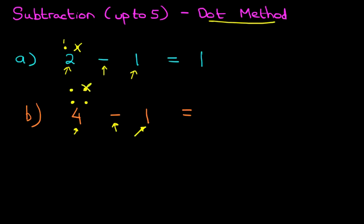Check the sign — it is minus, so we are going to take away, we are going to subtract. Now how much are we going to take away? It tells us in the question: we are going to take away 1. So let's cross out one dot — that is the dot we are taking away.